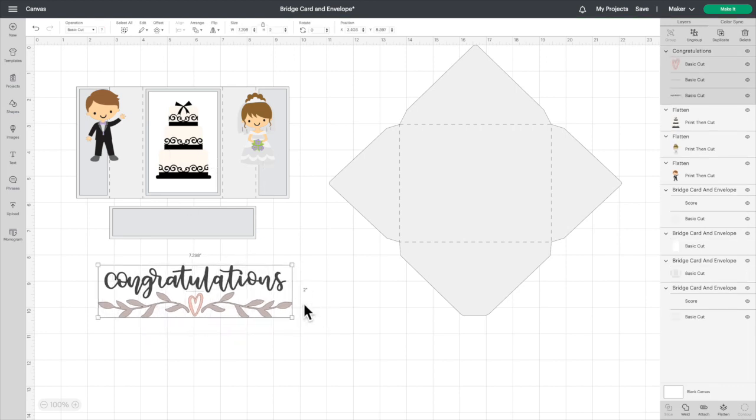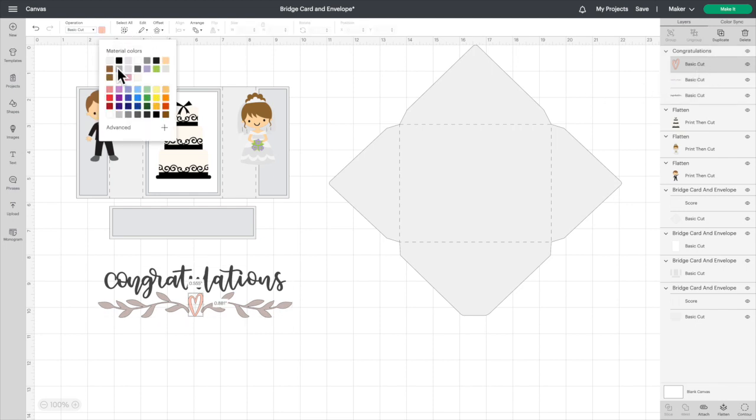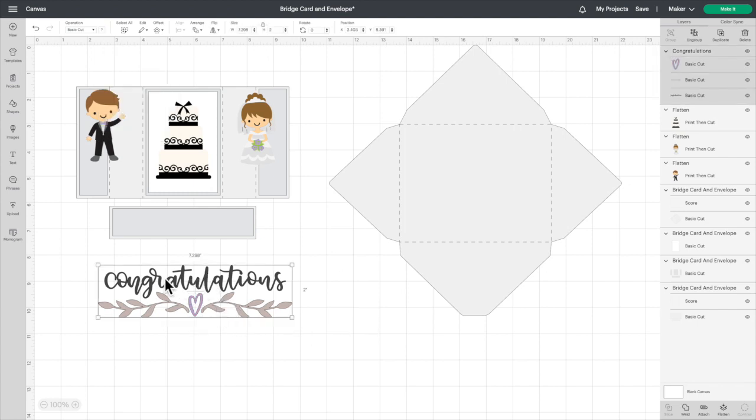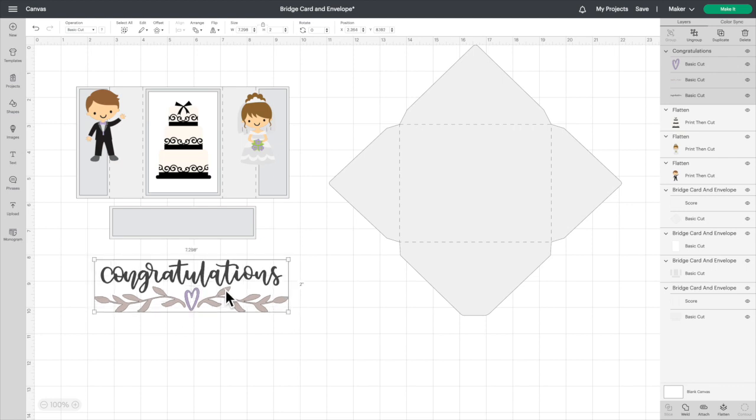We're going to change the color of the heart because it doesn't go with the purple. Hunt down the heart on the layers panel, highlight it, and then just switch it to purple. You can do any color obviously that you want, but before you flatten anything you have to change the color. You can't do it once you flattened it, so let's click flatten.